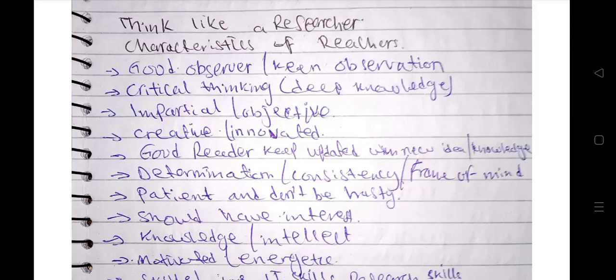The second one is critical thinking. Obviously critical thinking, research is a very technical aspect of study in education. So everyone cannot do research, it requires skills, obviously, and critical thinking. The researcher should be a critical thinker, and this critical thinking is developed by deep knowledge.